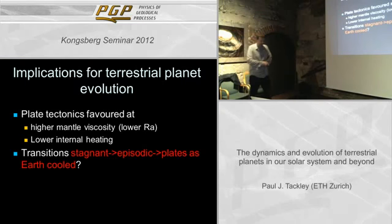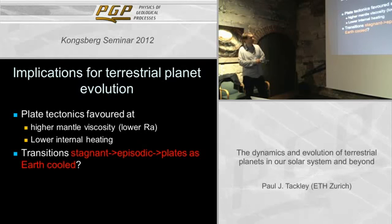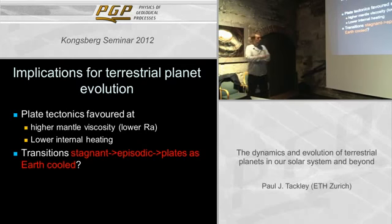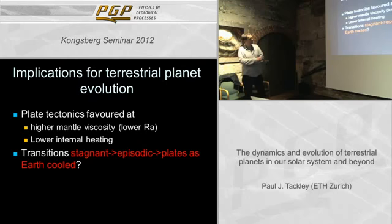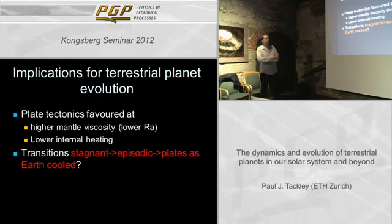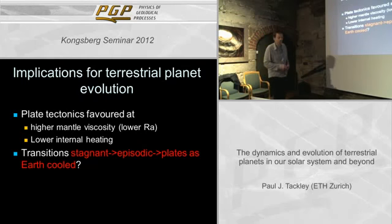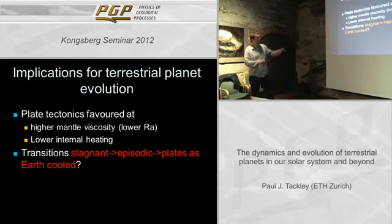The basic conclusions are that plate tectonics is favored at higher mantle viscosity, meaning lower Rayleigh number — that surprises some people because normally you'd think more vigorous convection should be more likely to result in plate tectonics, but you actually get lower stresses with lower viscosity. Also favored at lower internal heating. Both of these things have decreased as the Earth has cooled over geological time: viscosity has become higher as the mantle cools, and internal heating rate has decreased because the radiogenic elements decay. This could lead to transitions from stagnant to episodic to plate tectonics-like behavior.